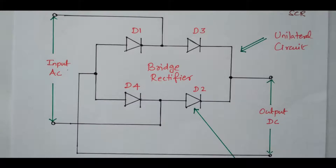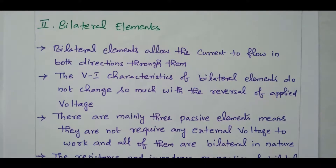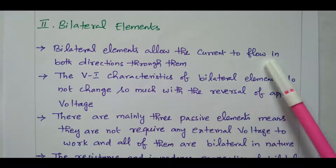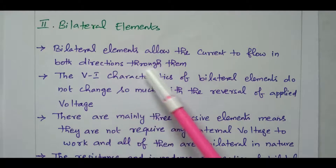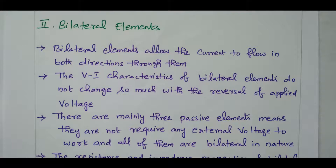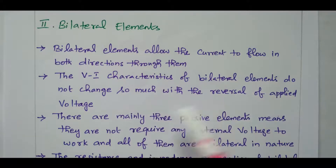Now we will see the bilateral element. Bilateral elements allow the current to flow in both directions through them. Current can flow in both the positive direction as well as the negative direction. The V-I characteristics of a bilateral element do not change significantly with the reversal of the applied voltage. Whether the current direction is positive or negative, the characteristics will not change much.